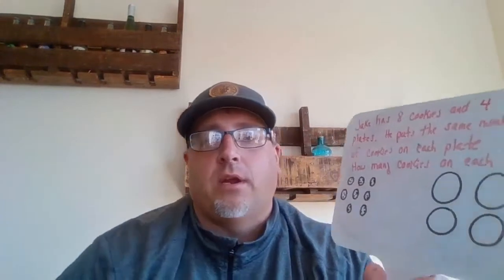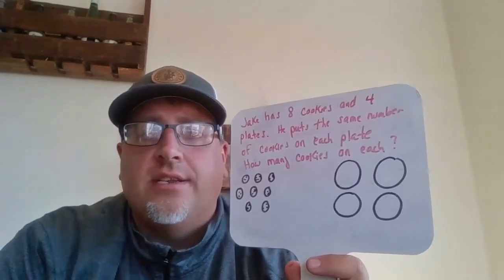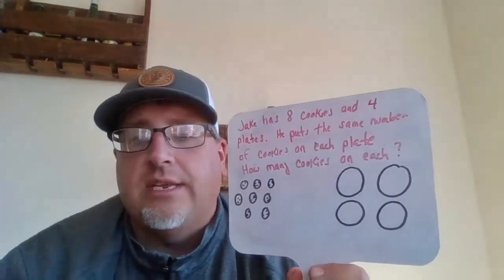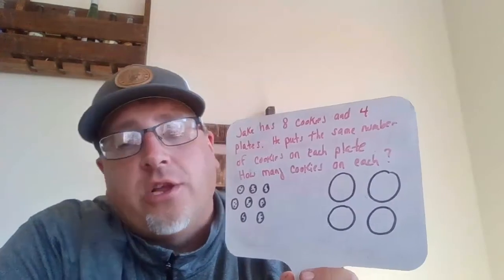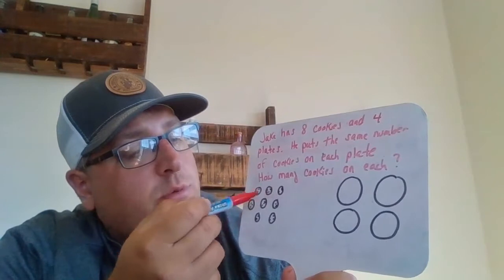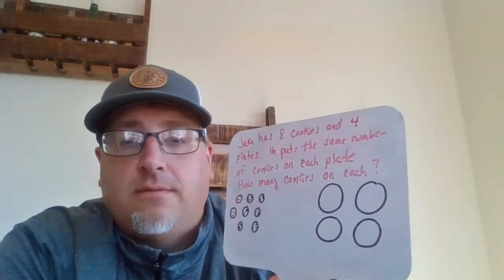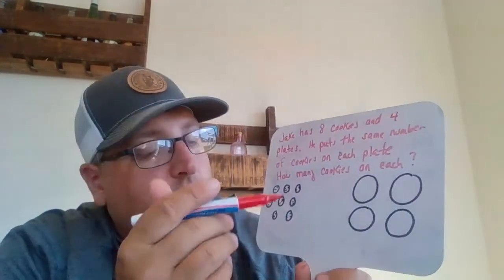Our first question: Jack has eight cookies and four plates. He puts the same number of cookies on each plate. How many cookies on each? Over here I have my cookies — one, two, three, four, five, six, seven, eight cookies — and over here I have four plates. Eight cookies and four plates.